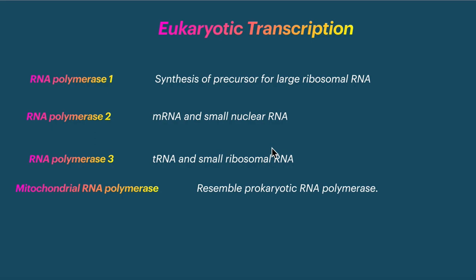The mitochondrial RNA polymerase is similar to prokaryotic RNA polymerase. The prokaryotic RNA polymerase has 5 subunits — this is an important point to keep in mind.